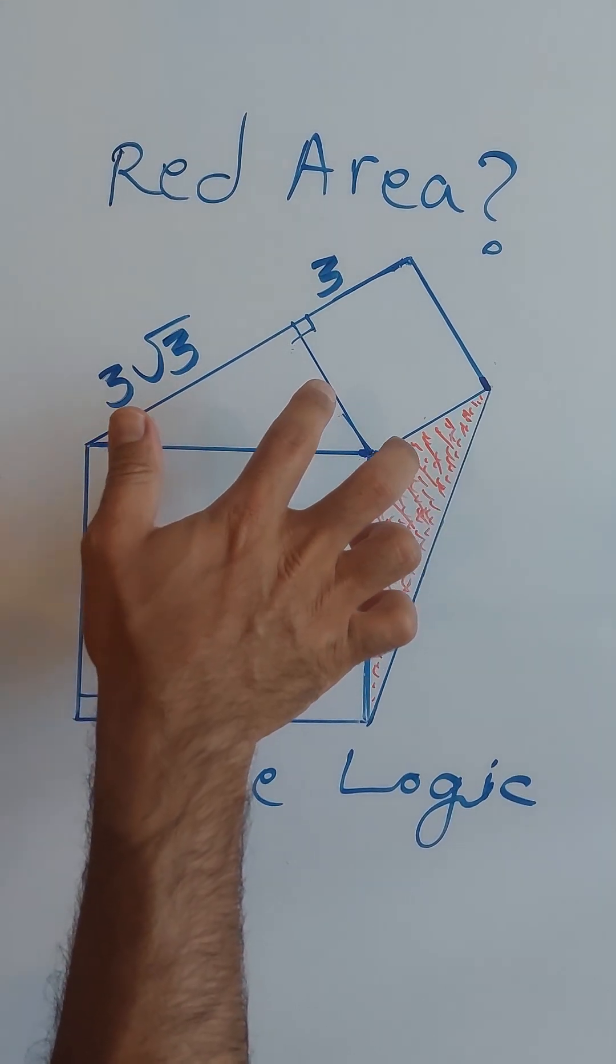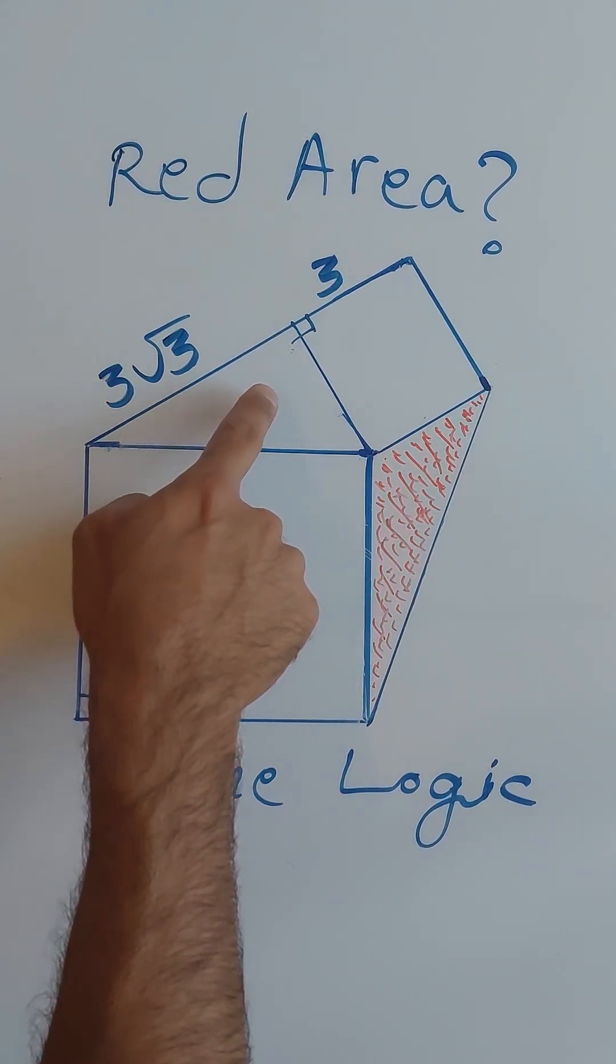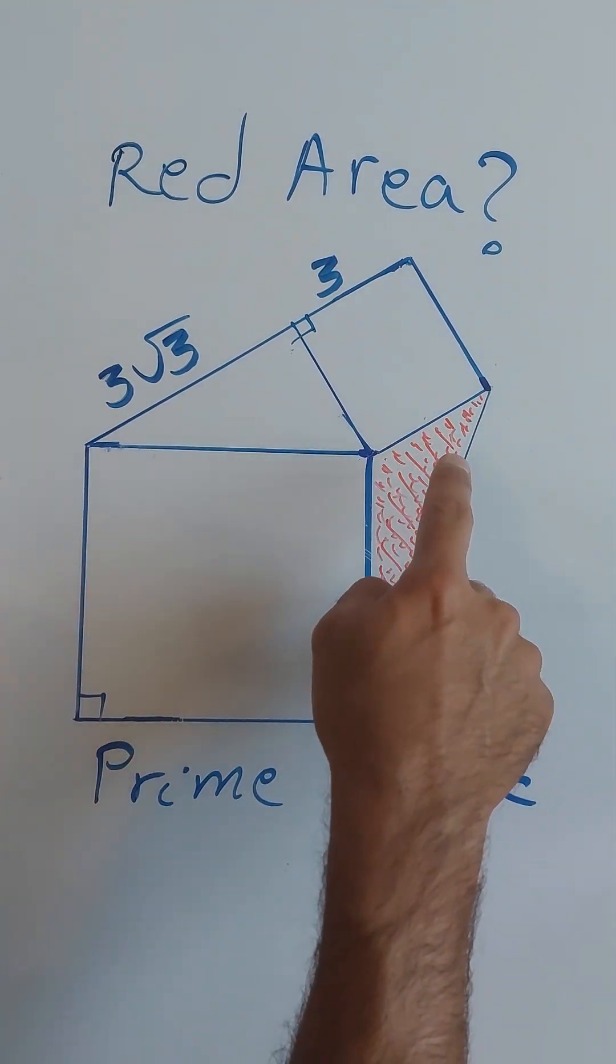Two squares and two triangles. So this one is a right triangle but this one obviously is not. What is the area of this red region?